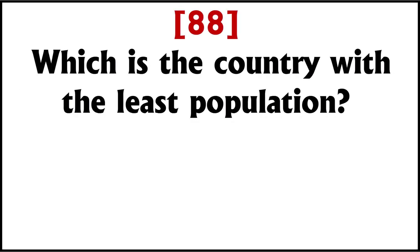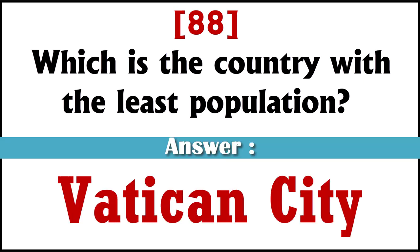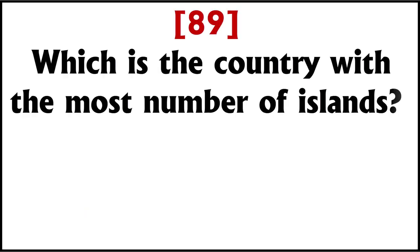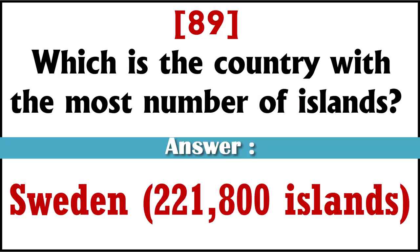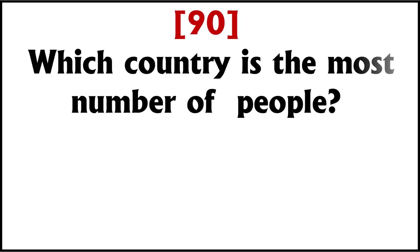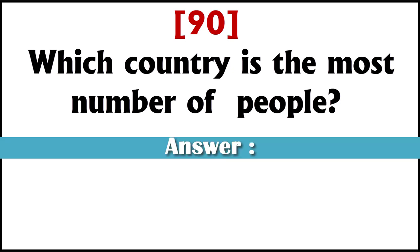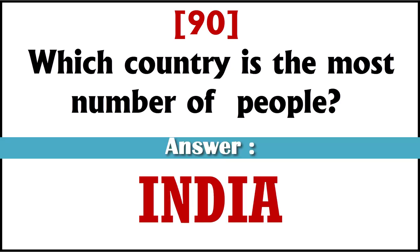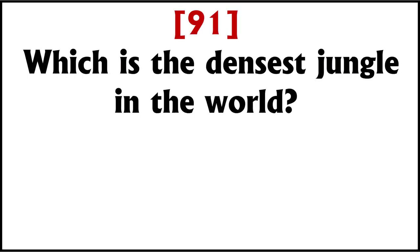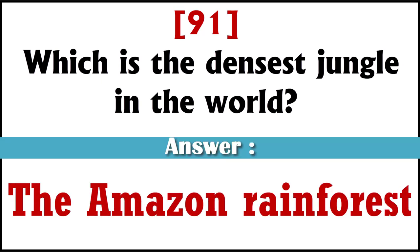Which is the country with the least population? Vatican City. Which is the country with the most number of islands? Sweden — 221,800 islands. Which country has the most number of people? India. Which is the densest jungle in the world? The Amazon Rainforest.